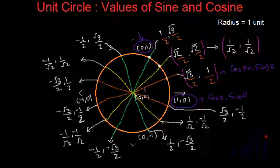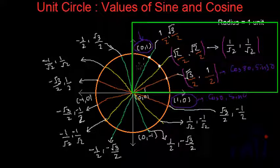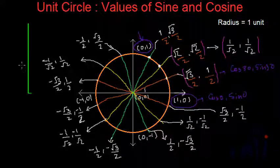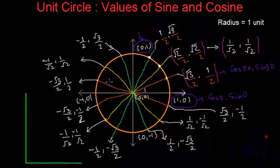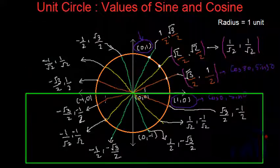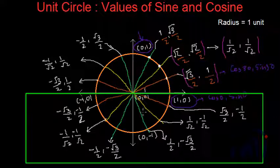If you reflect the values of the first quadrant across the y-axis, you get x negative and y positive for the second quadrant. If you reflect all those values across the x-axis into the third quadrant, you get both x and y negative. And in the fourth quadrant, you get x positive and y negative.